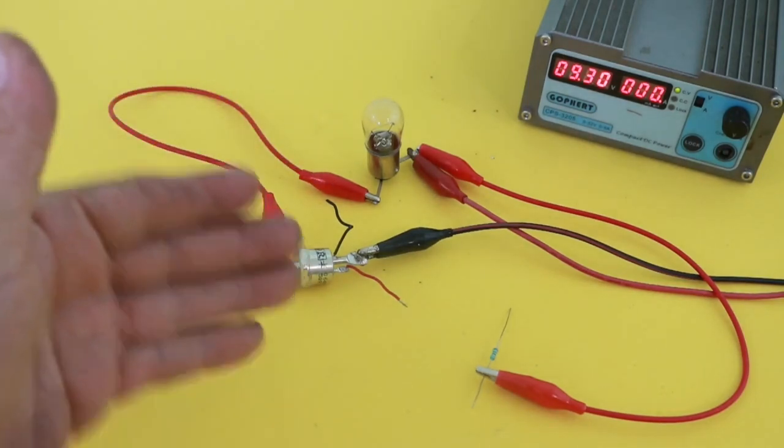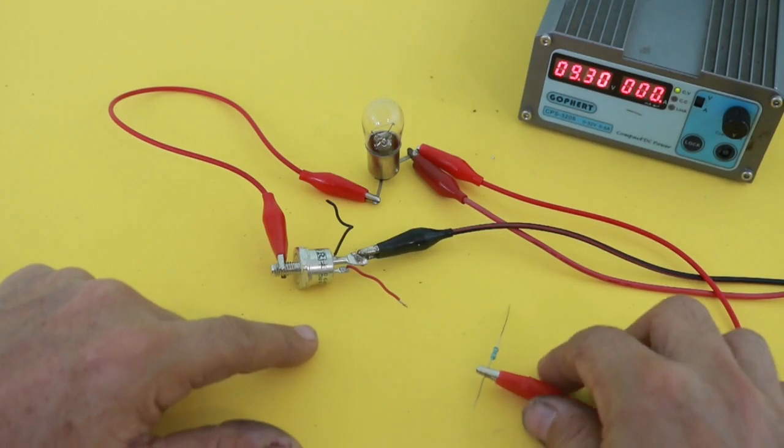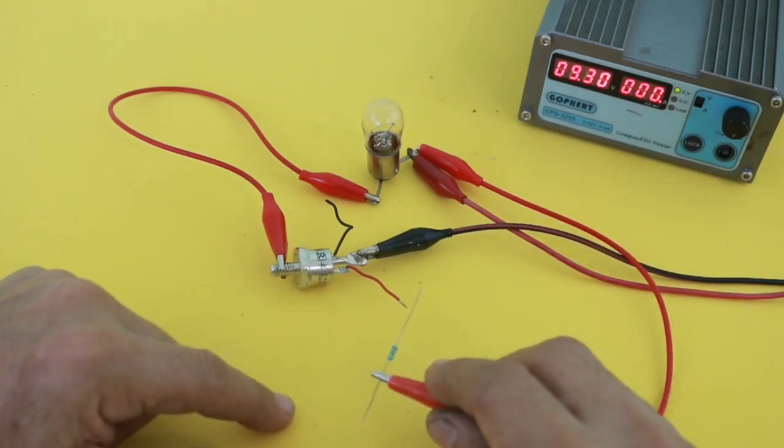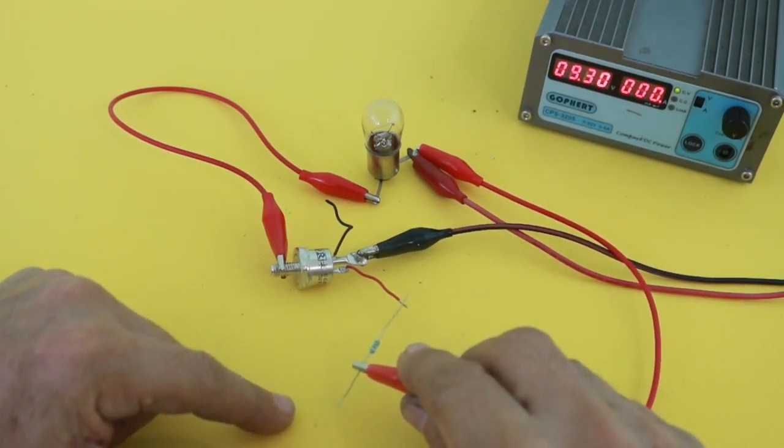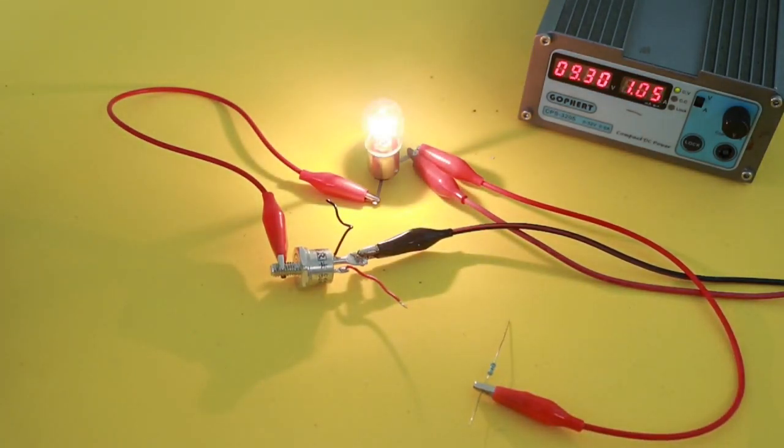...no current is flowing because the tyristor is open. But when I touch the gate, the current will flow through the gate and then the load is now on.